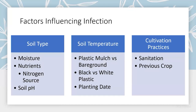Factors influencing infection include soil type, moisture, and water-holding capacity. Typically, the wetter the soil and the higher the water-holding capacity, the higher the incidence of soil-borne pathogens. What nutrients are available matters too — depending on your nitrogen source, some pathogens can thrive. Soil pH also plays a role; some pathogens are basically non-existent below or above a certain pH, though it varies by pathogen.